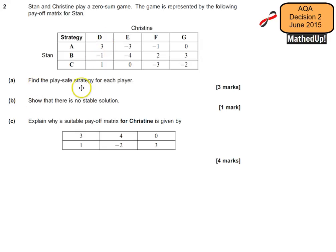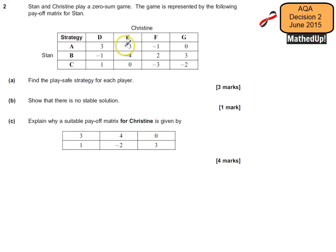Part A says find a play safe strategy for each player. To find a play safe strategy, for each of these outcomes for Stan, if he plays strategy A we're looking for the worst possible outcome for him. Along here, the worst possible outcome would be if Christine played E — so if Stan went for strategy A and Christine went for strategy E, that would give Stan a loss of 3. That's his worst case scenario for playing strategy A.